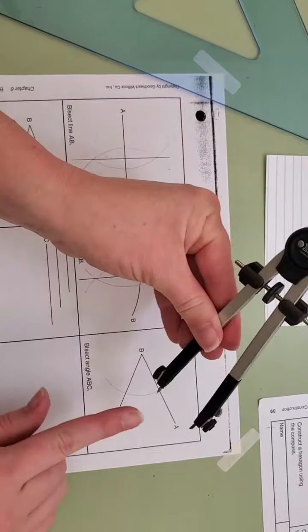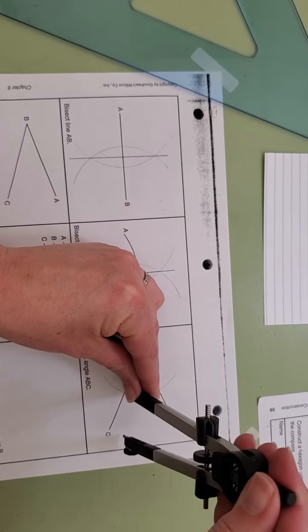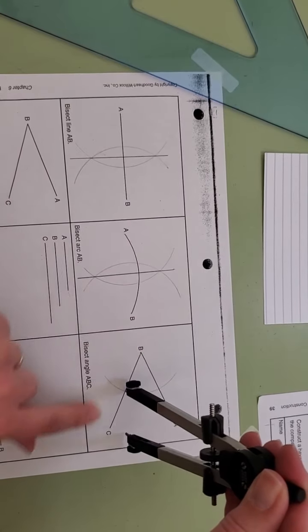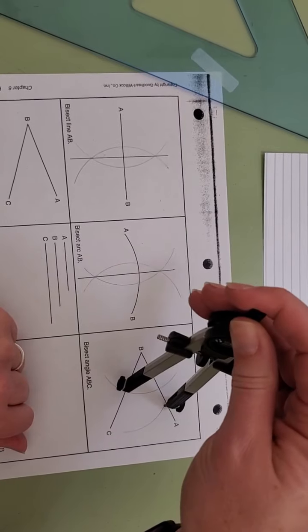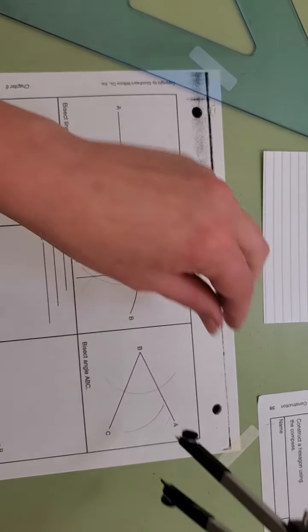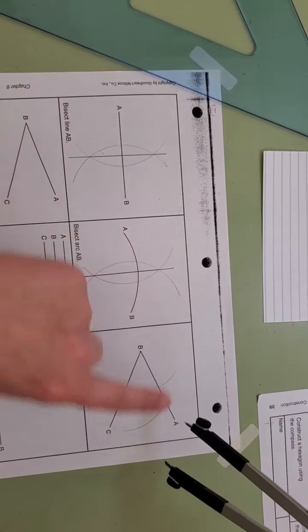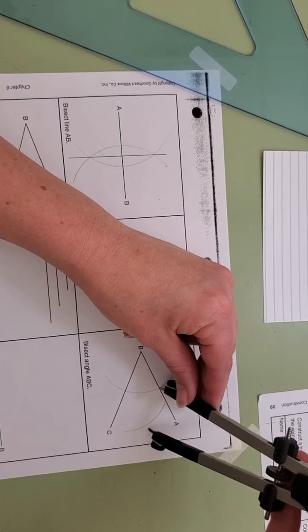Picking up my compass, I'm not going to change this dimension anywhere, but I am going to put it in on the line BC at the point where the arc crossed it and I'm going to create a second arc. I will then move it to line AB at this intersection and do the same thing.